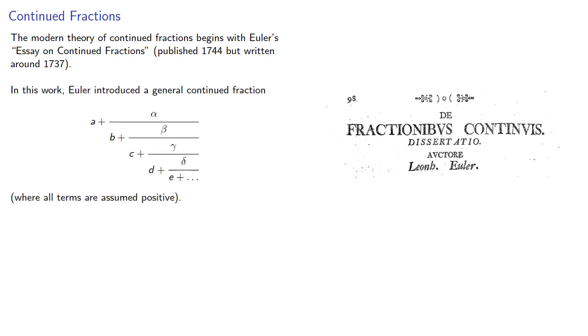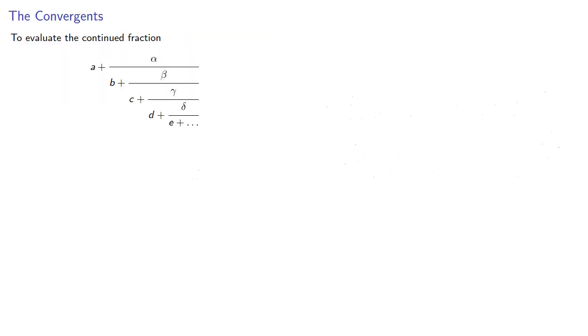Euler introduced a general continued fraction where all terms are assumed positive. To evaluate the continued fraction, Euler considered the partial quotients, which he eventually calls by their modern name, the convergents.